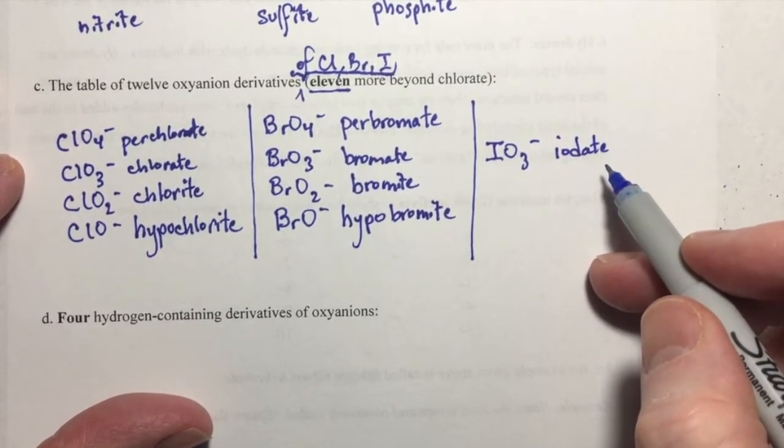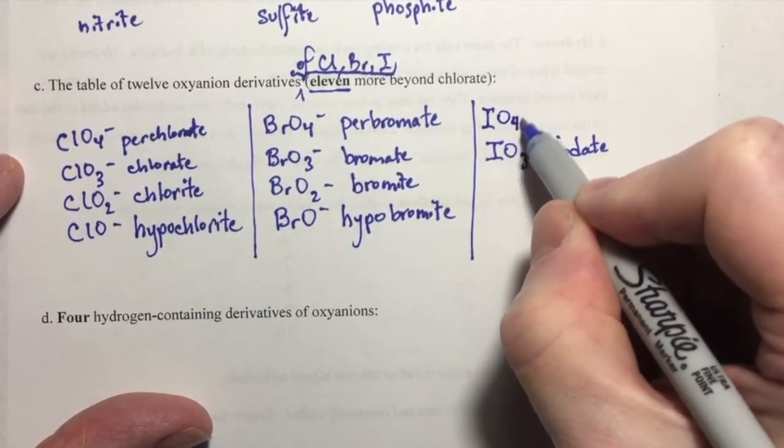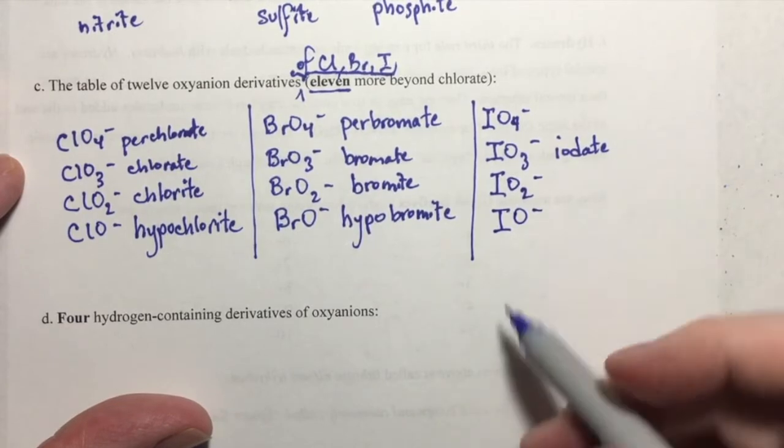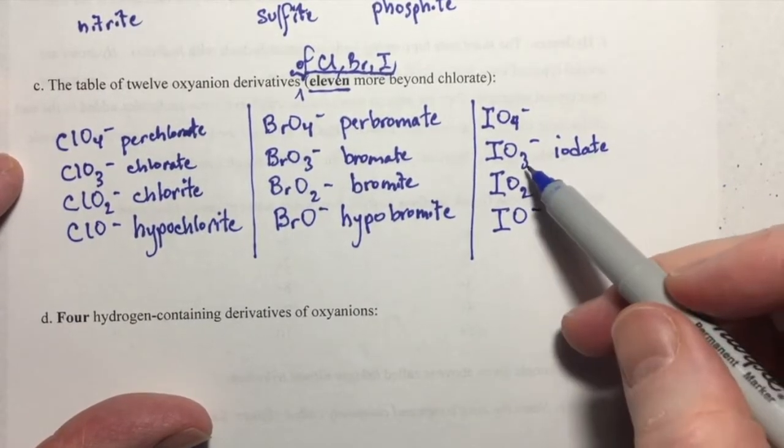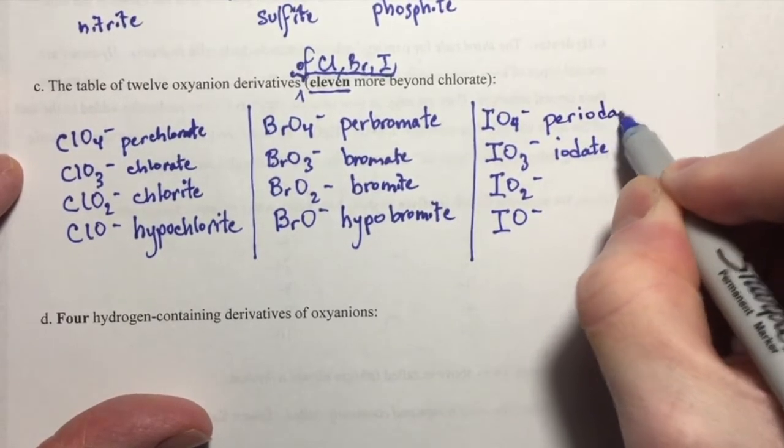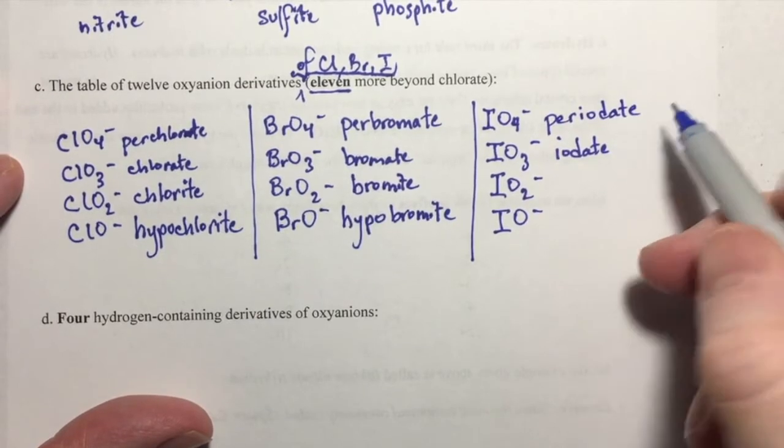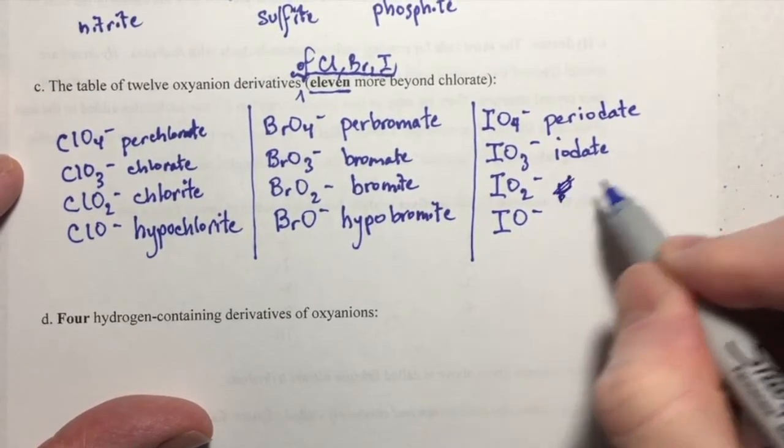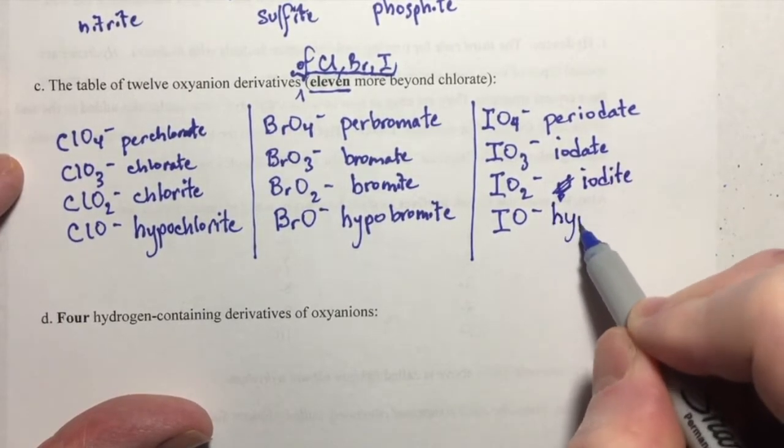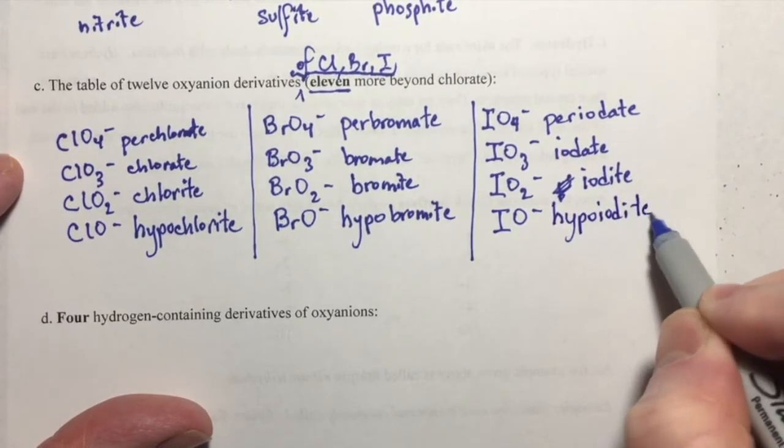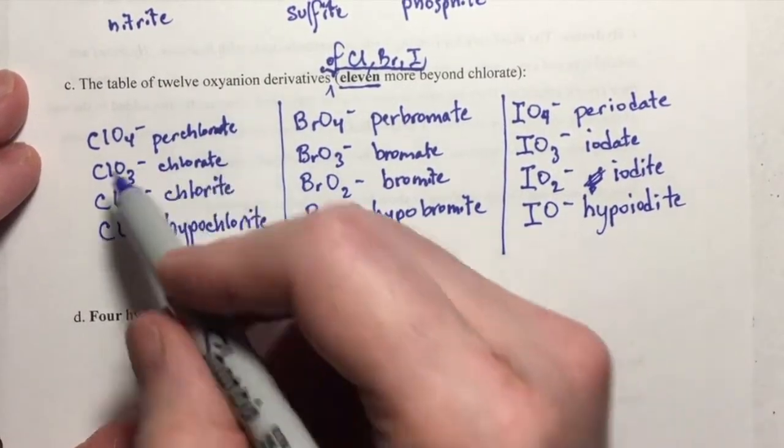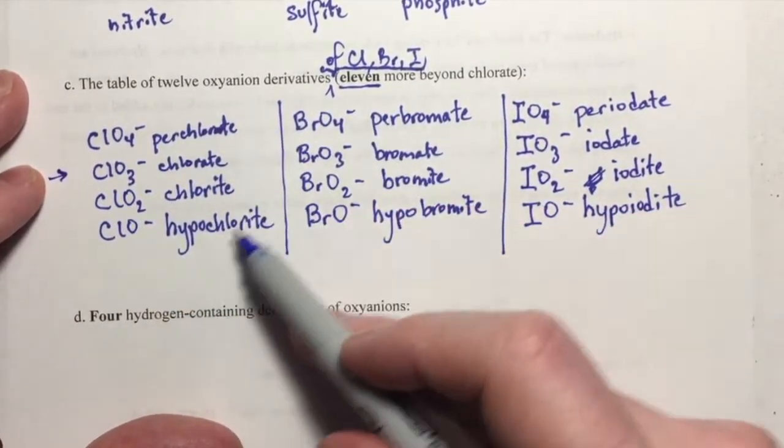And then we extend the pattern to the oxyanion derivatives of iodine. IO3 with a minus charge is iodate. One oxygen more, and one oxygen less, and two oxygen less than the ate anion. Periodate, iodite, and hypoiodite. So again, this is a table of 12 ions, but you already knew this one right here, the chlorate. So you're just adding 11 more to the list.